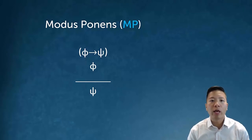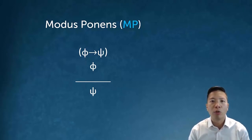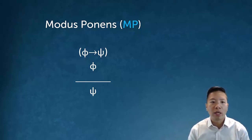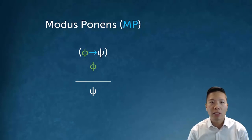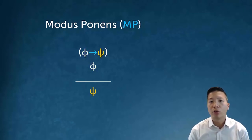The first rule we're going to look at is modus ponens, the most talked-about and famous derivation rule available — a perfectly valid deductive inference pattern. Modus ponens says that if I have a conditional statement phi arrow psi, and I also have the antecedent phi, then it's reasonable for me to conclude the truth of the consequent, psi.